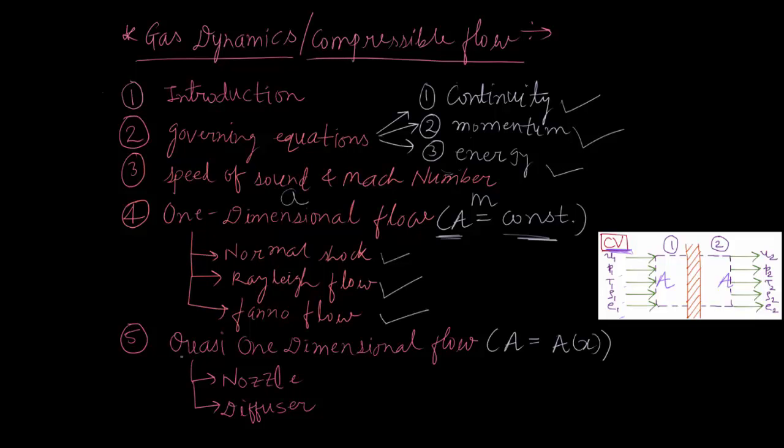Then we will move on to what is called quasi one dimensional flow, in which our area A is a function of x direction. It is called quasi one dimensional flow because properties such as pressure, density, temperature are function of x only.